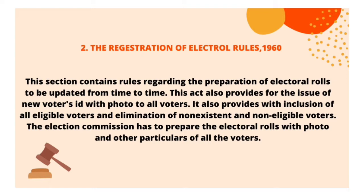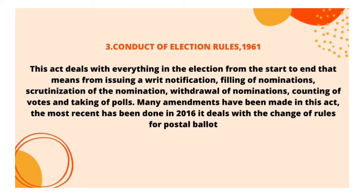The Registration of Electoral Rules 1960 contains rules regarding the preparation of electoral rolls to be updated from time to time. This act provides for the issue of new voter IDs with photos to all voters, ensures the inclusion of all eligible voters, and the elimination of non-existent and non-eligible voters. The Election Commission is required to prepare the electoral rolls with photos and all particulars of all voters.